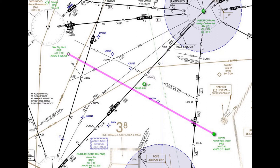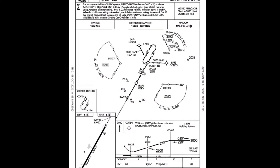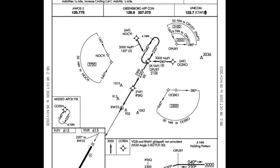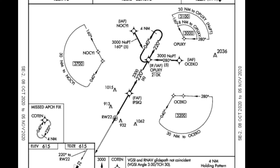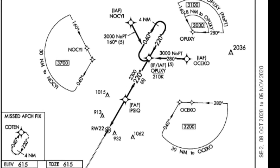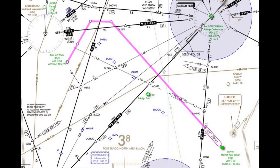Here is our setup. We are on an IFR flight to Siler City where we are planning to fly the RNAV approach to runway 22. We are starting our flight plan at Harnett, but that's only for convenience — we are actually going to be starting our flight over Harnett at 4,000 feet.